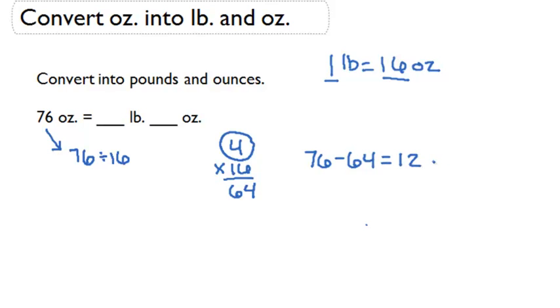That tells me that I have a remainder of 12 ounces after 16 goes into 76 four times. This means that I have 4 pounds, 4 whole times that 16 went in, and then I have a remainder of 12 more ounces. So 76 ounces is equal to 4 pounds and 12 ounces.